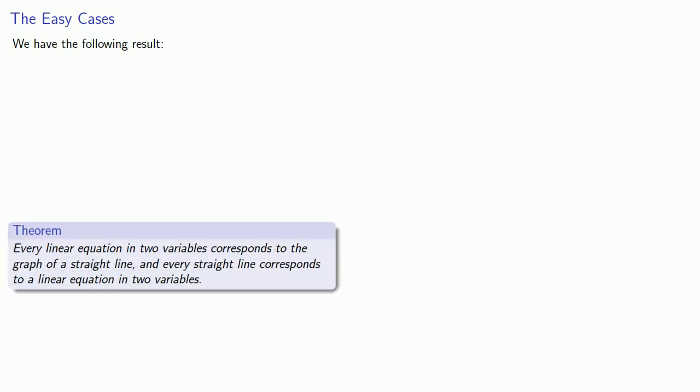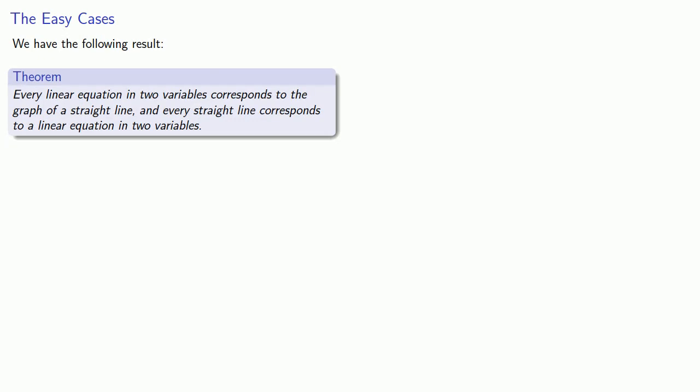We have the following result: every linear equation in two variables corresponds to the graph of a straight line, and every straight line corresponds to a linear equation in two variables.